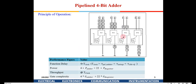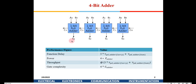A better option is a pipelined 4-bit adder. In this structure, A0 and B0 are given to the first full adder and the output — both the sum and carry — go into a register. A1, B1 wait in a register; A2, B2 and A3, B3 are similarly held in registers. In the first clock cycle these inputs compute, and the partial results are captured into the registers.